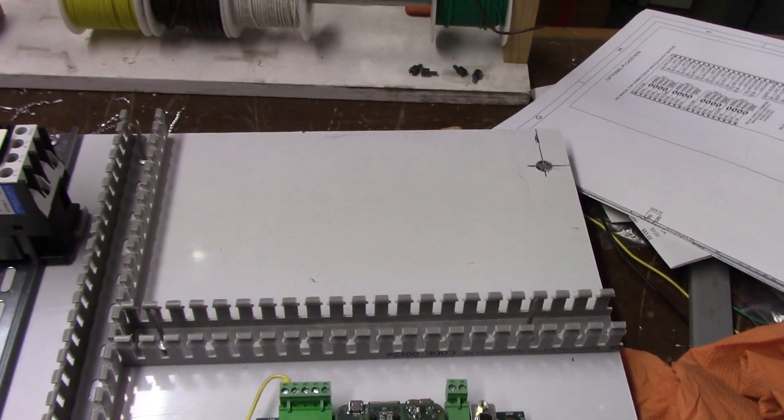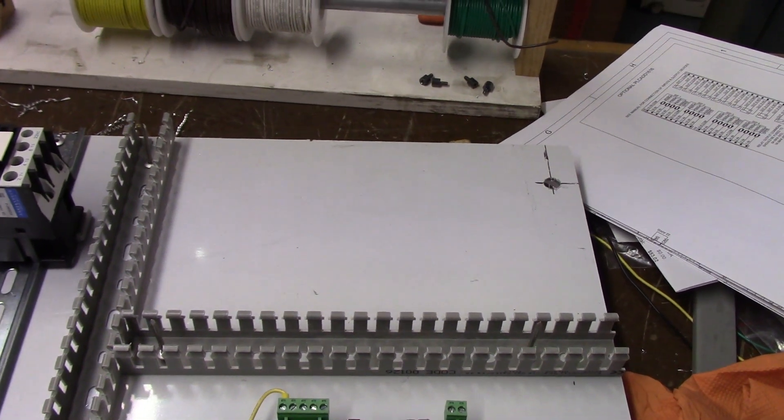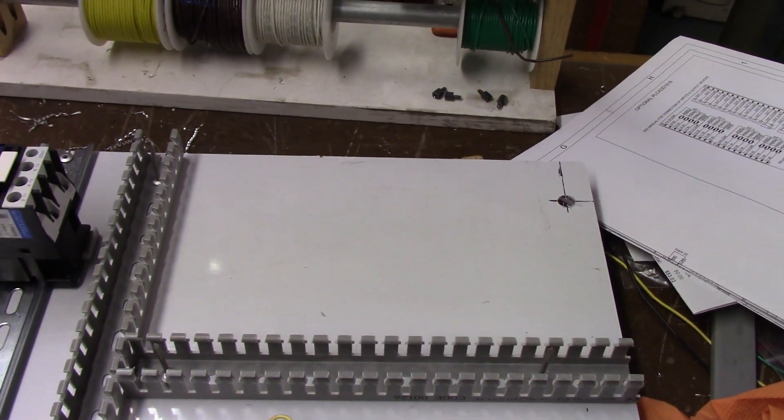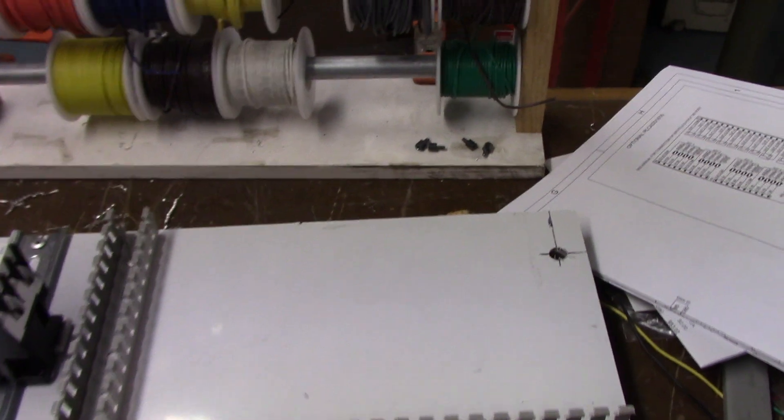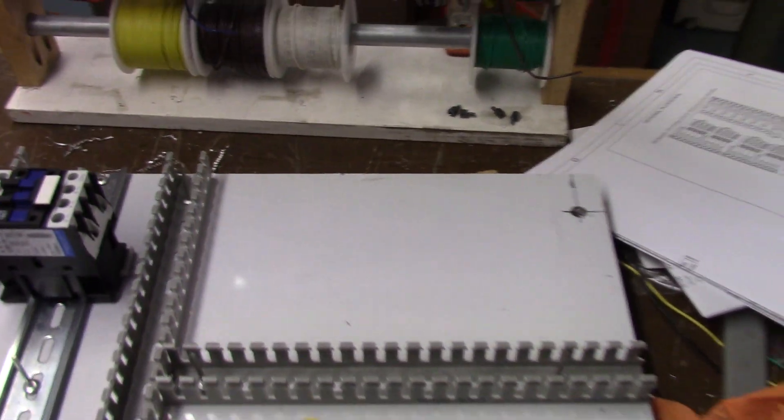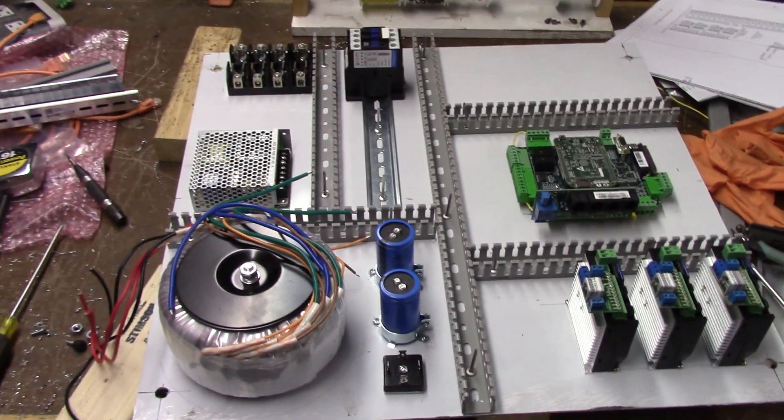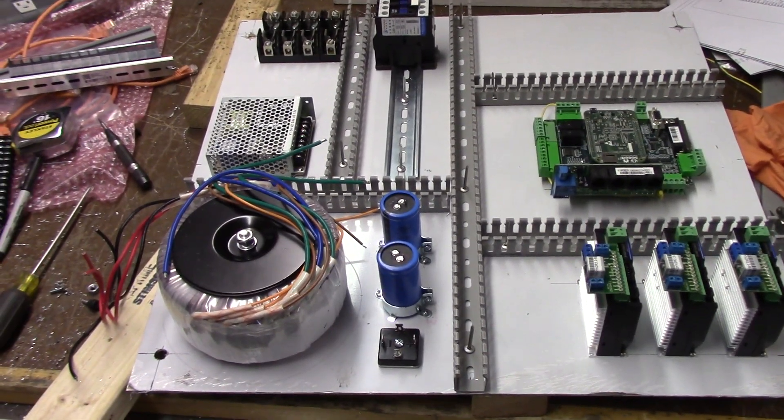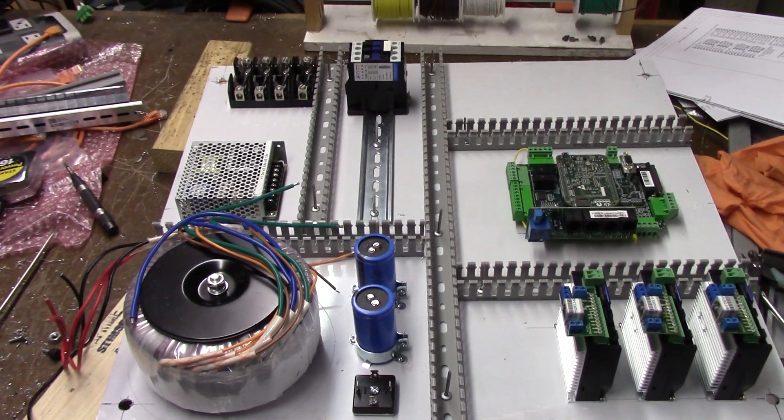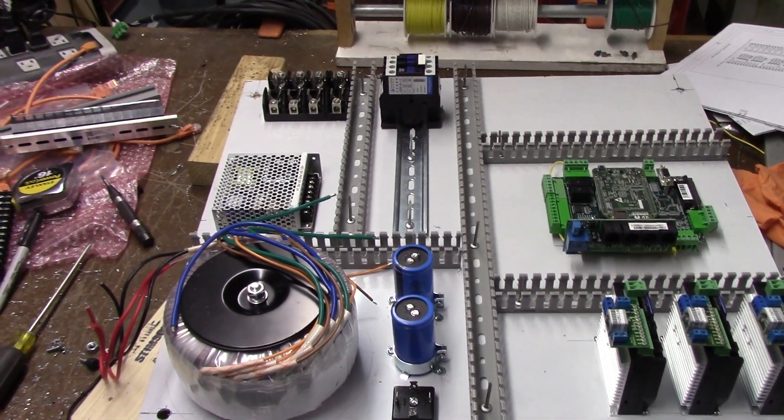This space here is going to be reserved for relays. I still have to decide on output relays, one of them for the vacuum pump, one of them for the vacuum. Trying to decide what to do there, so that's what this space is reserved for. I got to give that a little bit of thought.